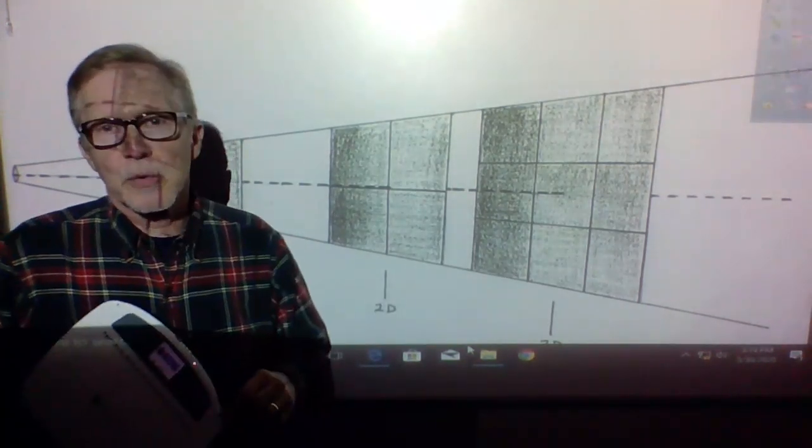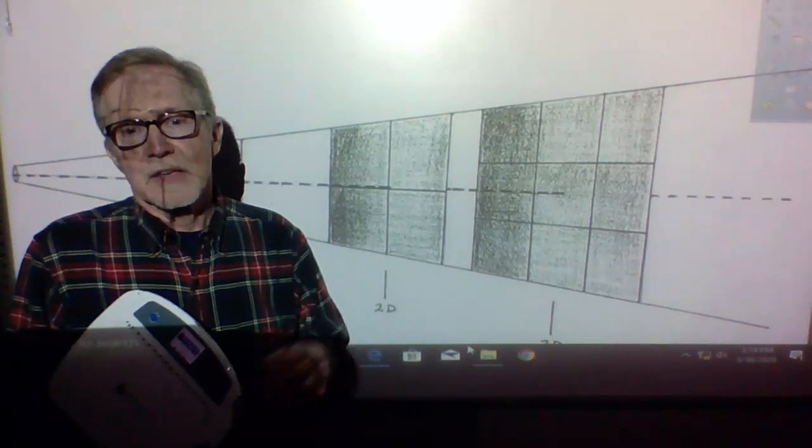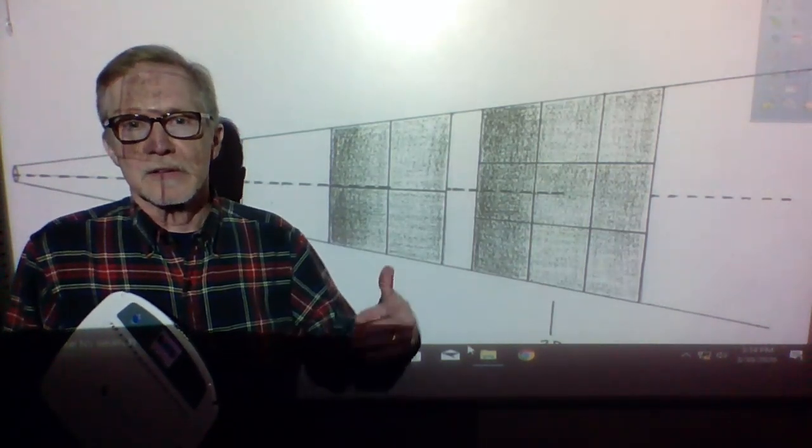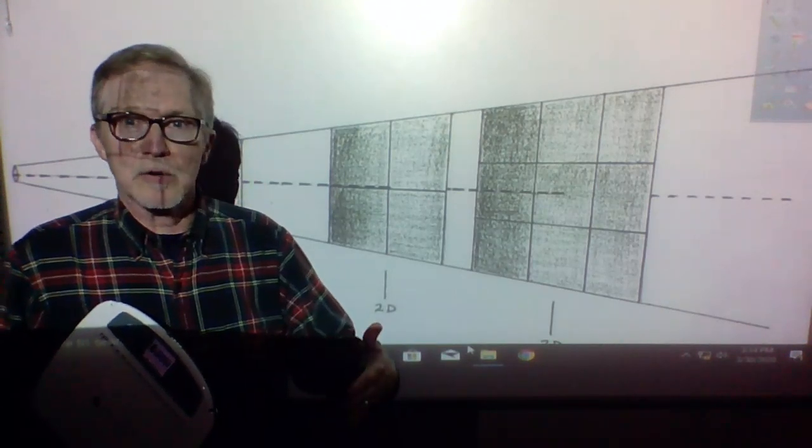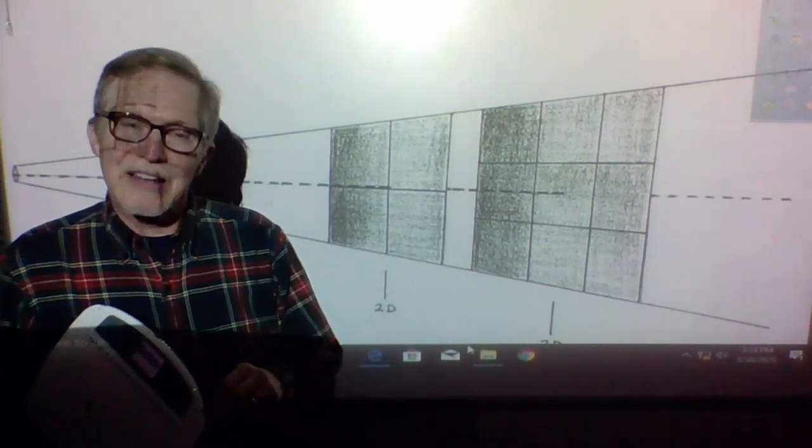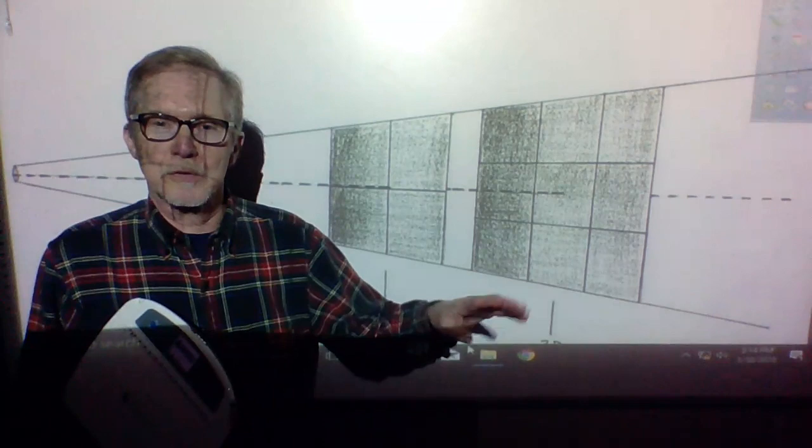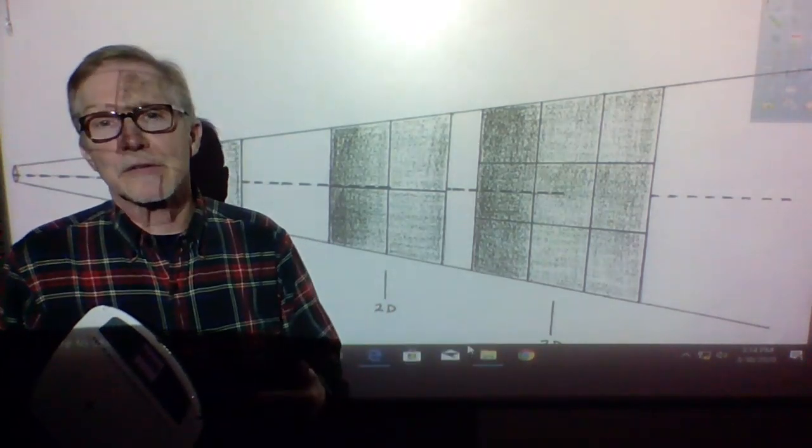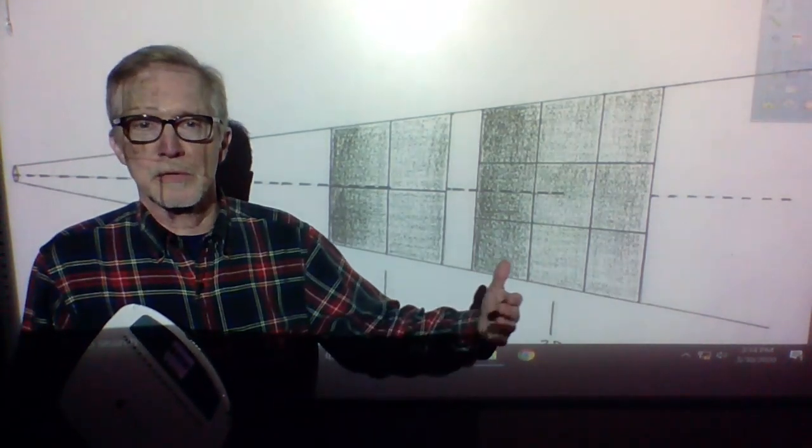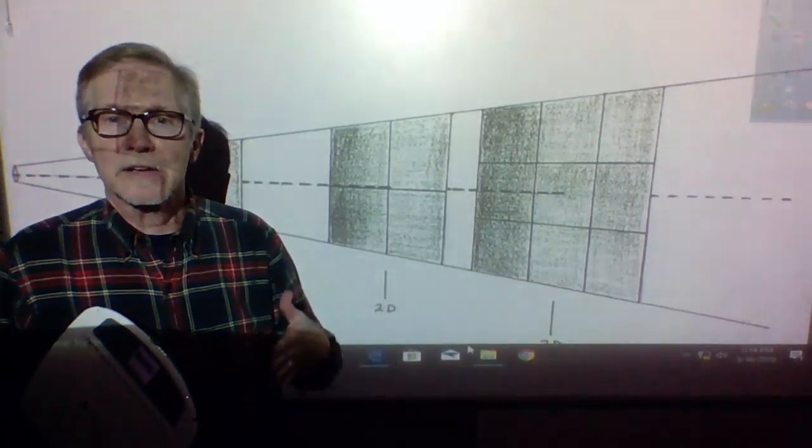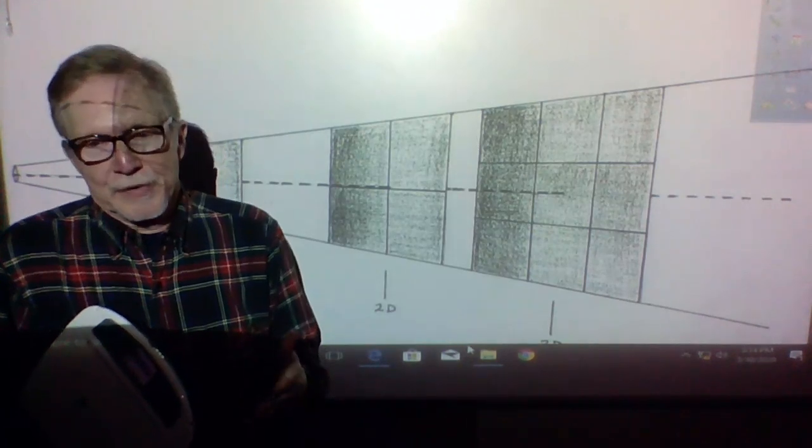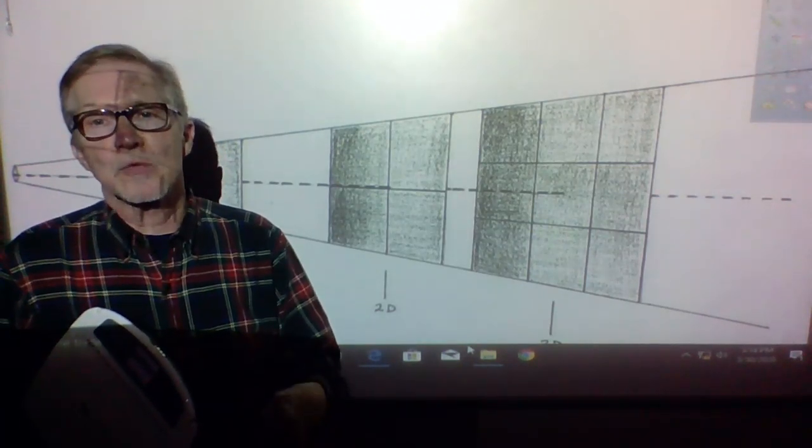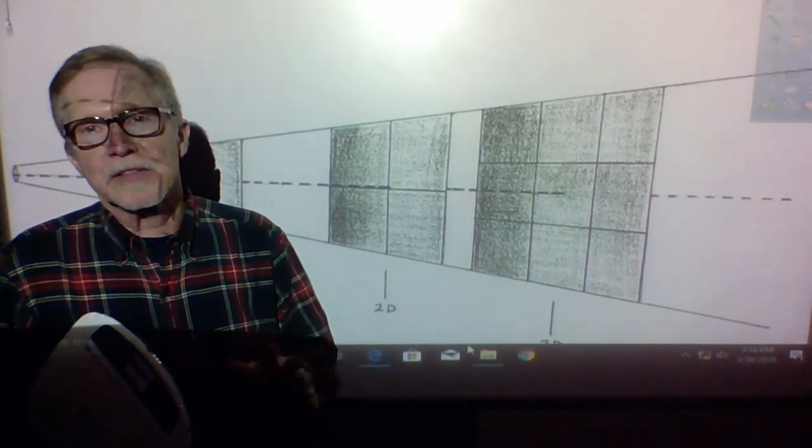So here's what the inverse square law is about. If you get closer to something, it gets stronger, like gravity. Gravity gets stronger when you're closer to the planet. Light gets stronger when you're closer to the light itself. Sound gets stronger when you're closer to the speaker. And it gets quieter as you go away. The light gets dimmer. The gravity gets weaker. At what rate does it get weaker? Let's look at that.